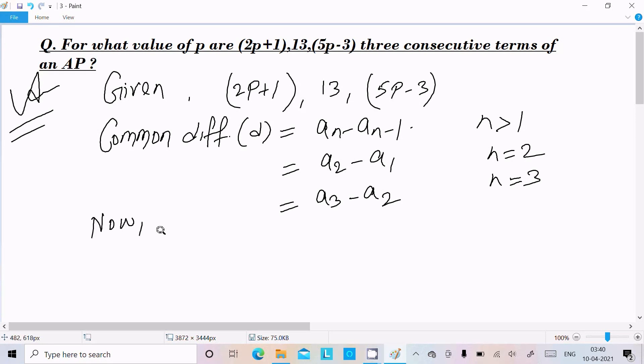So here we can write a2 minus a1 equal to a3 minus a2. And this is a1, this is a2, here this is a3.